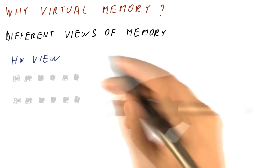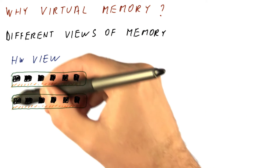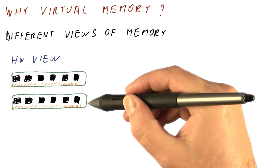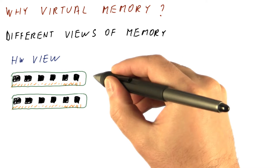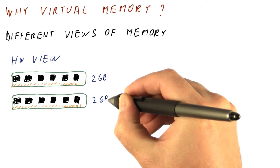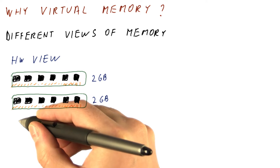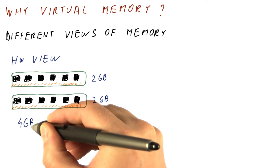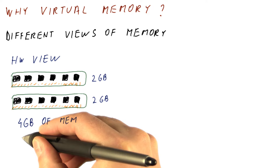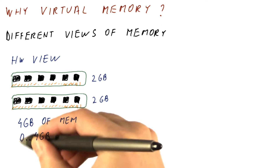In the hardware view, the machine has some memory modules with an actual amount of memory that can be accessed by the real processor. Let's say that this module is two gigabytes and this module is two gigabytes. So what the hardware really has is four gigabytes of memory, and the addresses for this four gigabytes are going to be zero through four gigabytes.